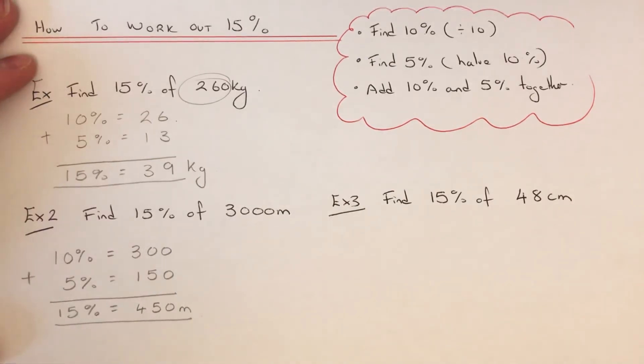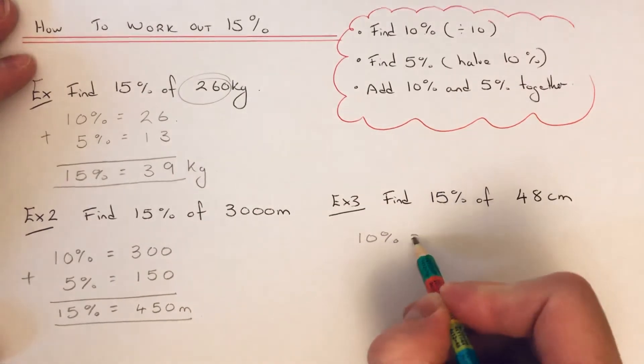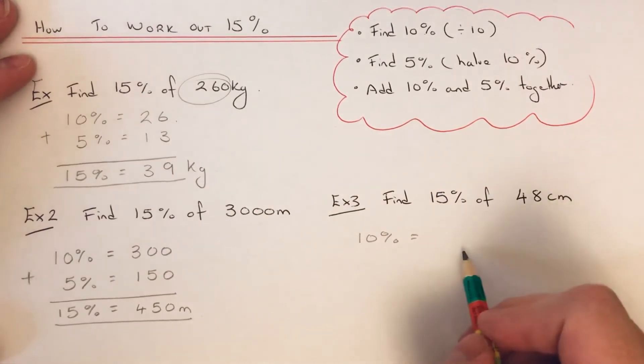Let's have a look at the final example. We're going to work out 15% of 48 centimeters. Again, start off with 10%. We need to do 48 divided by 10,